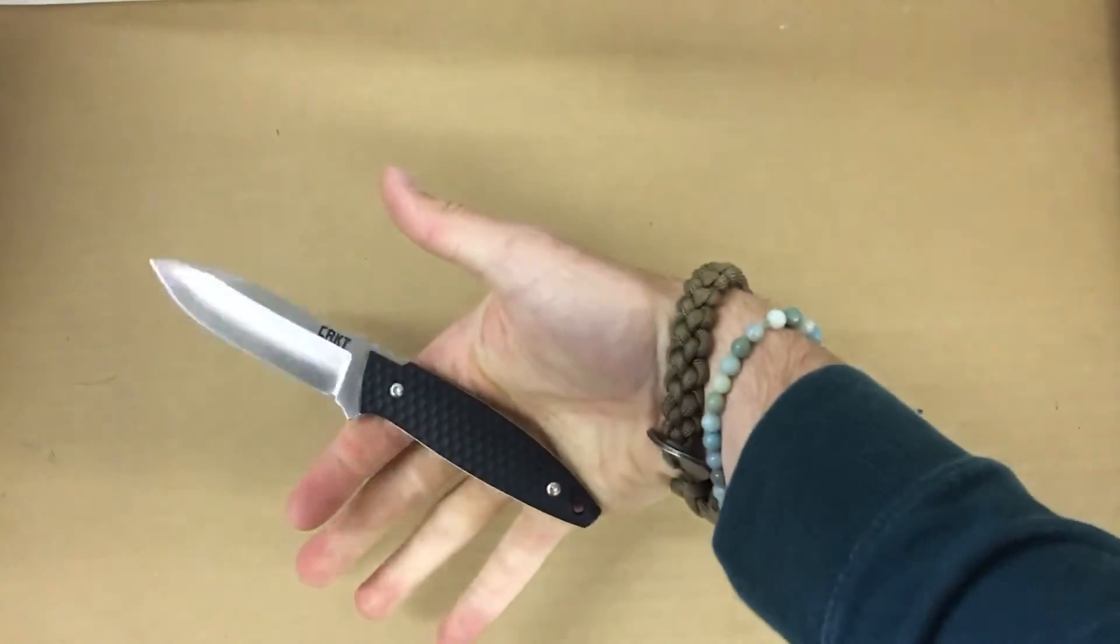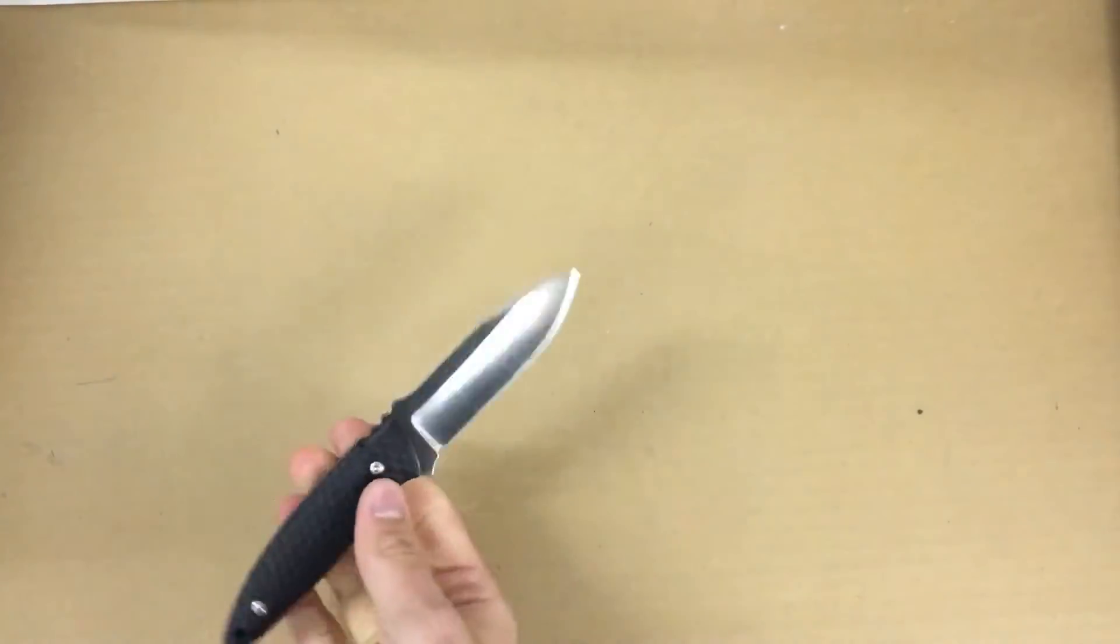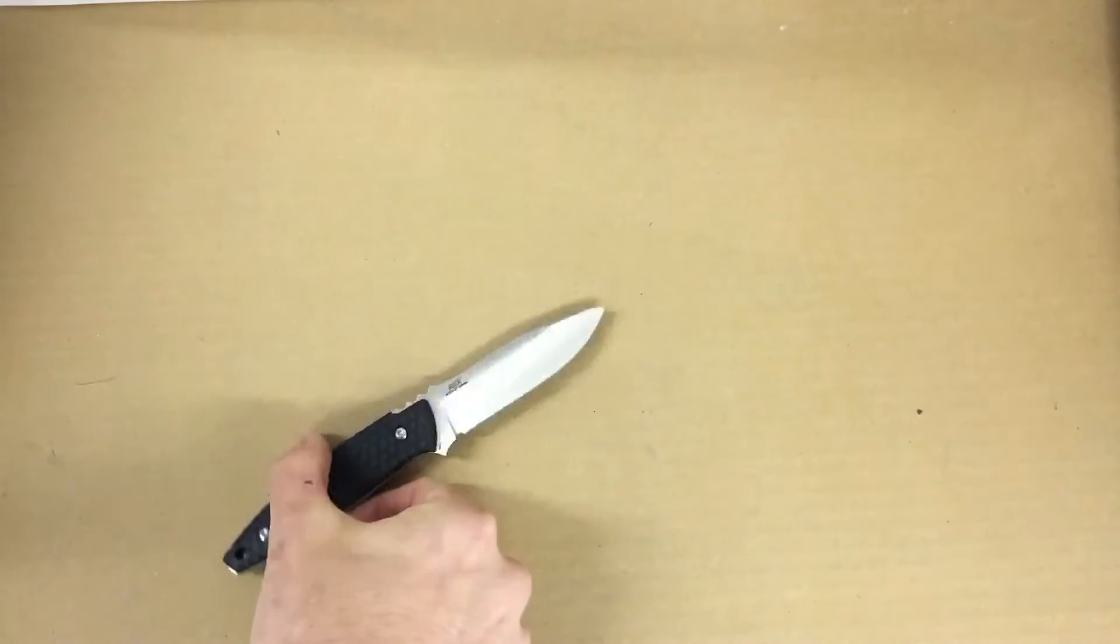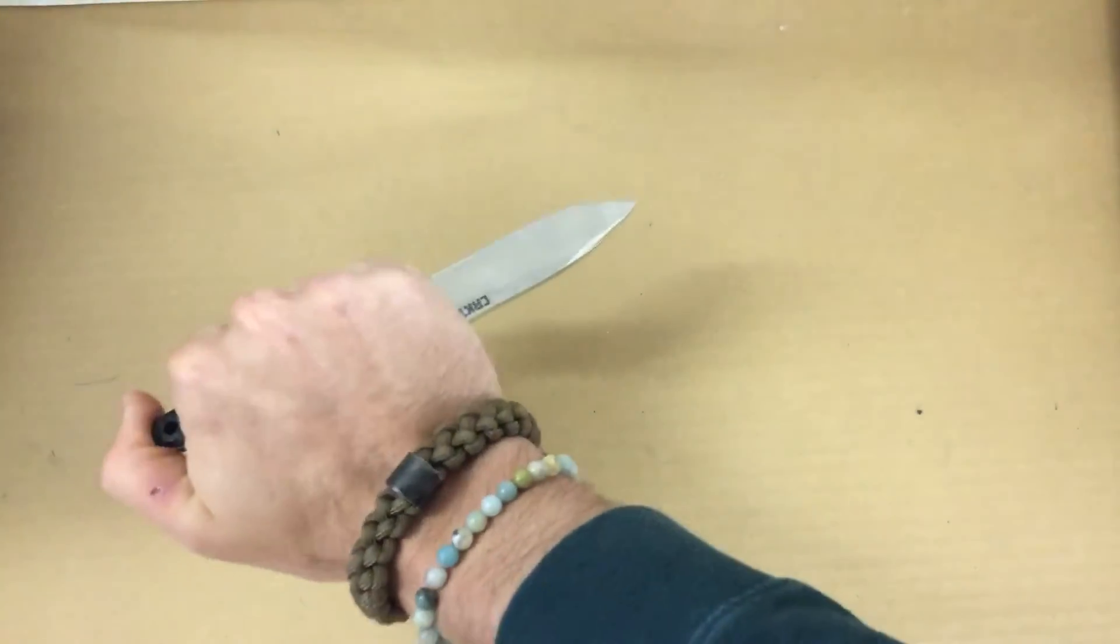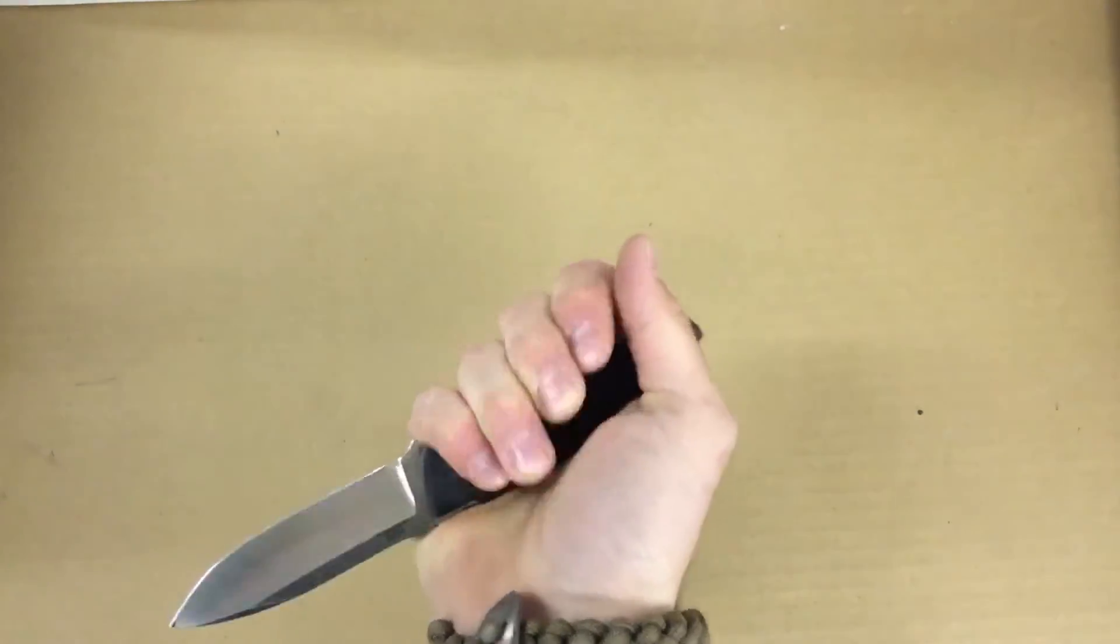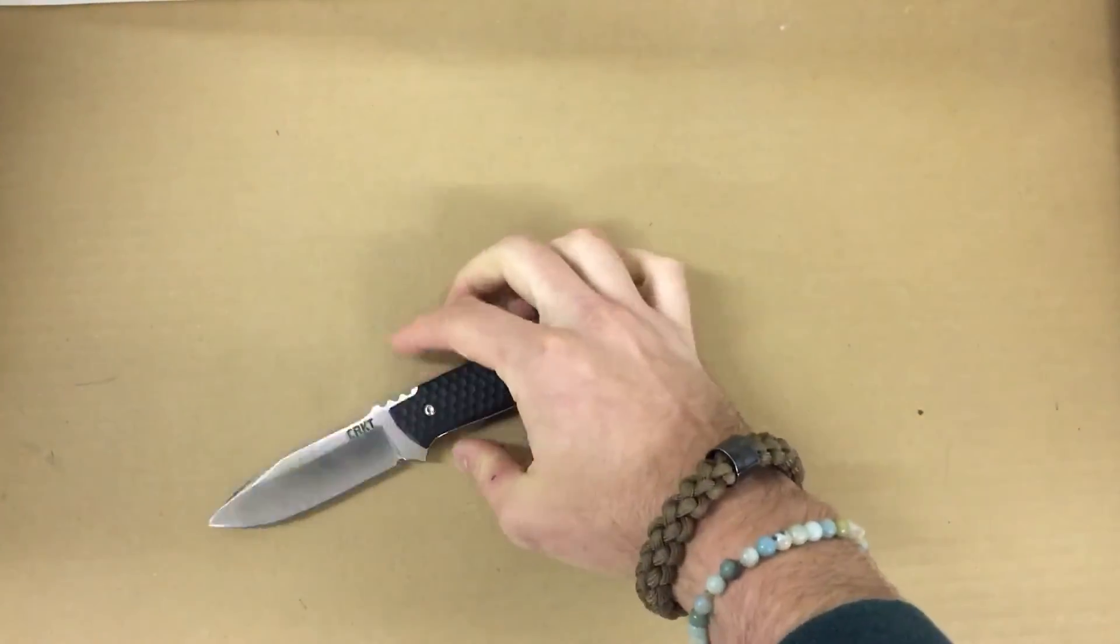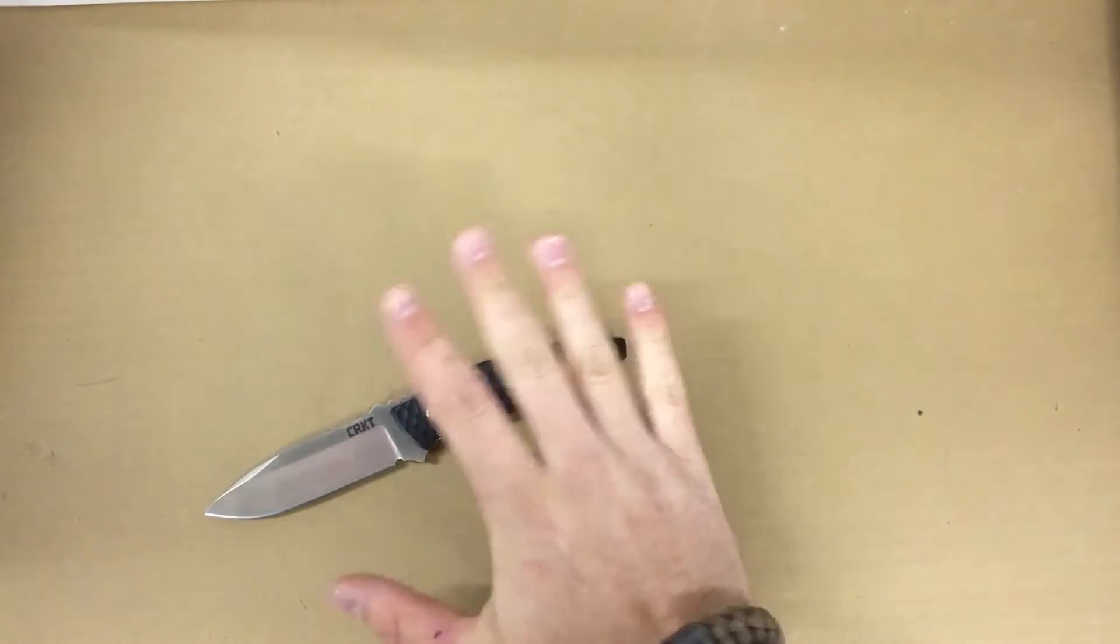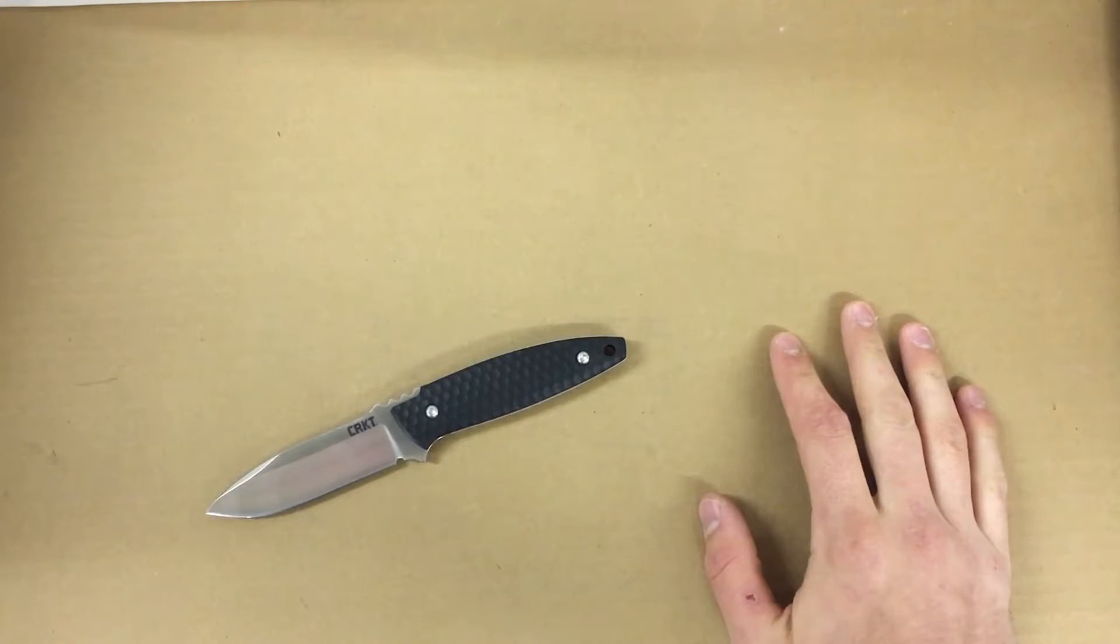This size of blade I think is a good EDC fixed blade size. Any smaller you're going to be losing some grip space on the handle. Any larger it's going to be a little bit harder to carry, a little bit heavier. For basic utility tasks from opening letters and boxes to cutting up fruit, this is going to be a good size for that. I think Lucas Burnley intended this knife to be somewhat of a backup tactical knife.